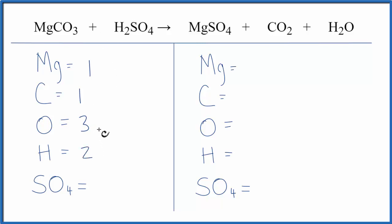And often with these types of equations, if you have a polyatomic ion like SO4 here, and you see it on the other side, it's easiest to leave it as just one item. So I'm going to say I have one SO4 here.